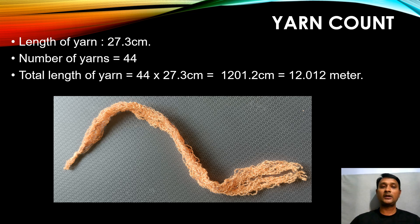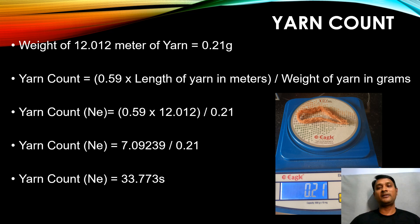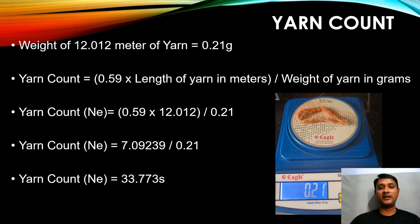Now we have the length of yarn in meters: 12.012 m. We weigh the same 12.012 m of yarn and get 0.21 grams. Substituting into the formula: N = 0.59 × 12.012 ÷ 0.21 = 33.77 Ne count, which is approximately 34 count. We have now completed two parameters: loop length and yarn count.